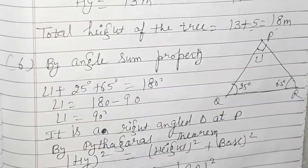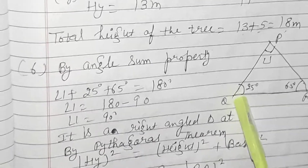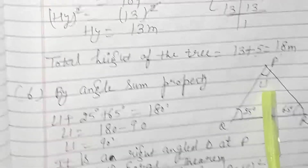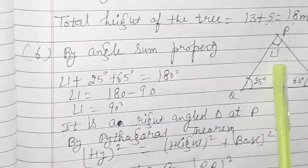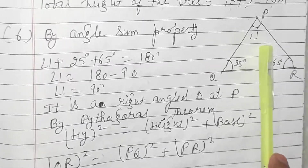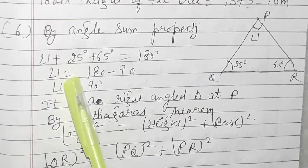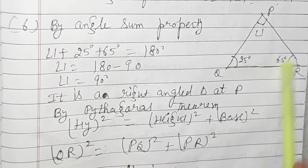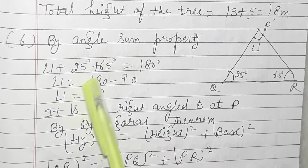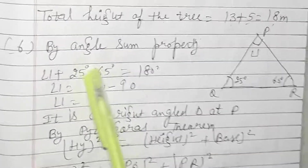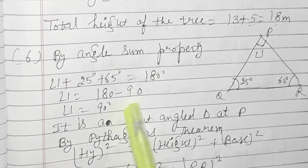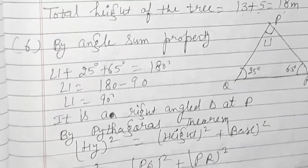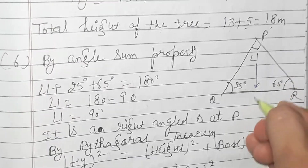Question 6: A triangle is given in the book with angles 25° and 65°. The third angle is not given. I need to show whether it is a right angle triangle. By the angle sum property, all angles of a triangle sum to 180°. So 25° + 65° = 90°, and 180° − 90° = 90°. The third angle is 90°, so it is a right angle triangle.